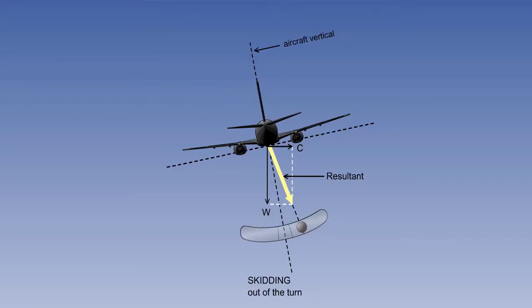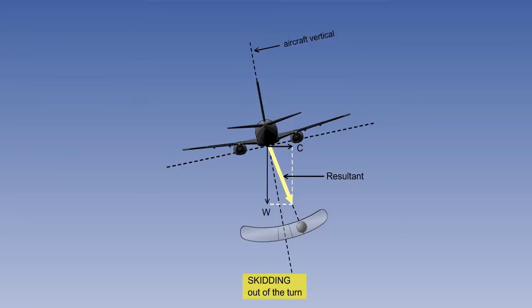With insufficient bank, the aircraft will skid out of the turn and the indication on the slip indicator will be that the ball will have moved in the opposite direction to the turn. However, if we assume that the TAS and the rate of turn have remained the same as for the balanced turn, the force of gravity and centrifugal force experienced will not have changed either. What has happened is that the tube, and therefore the aircraft, has moved relative to the ball. We can say therefore that a skidding turn results from too little bank, and the ball in the slip indicator will appear to move in the opposite direction to the turn.